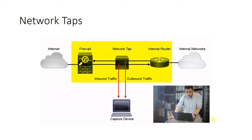In the diagram, you see a depiction of a typical fiber-based network tap. The network tap must be inserted in between the two devices, which means some downtime is necessary. As you can see, this network tap is inserted between a perimeter firewall and the primary router on the network.